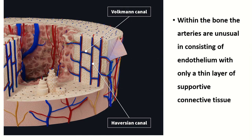The periosteal artery passes through Volkmann's canal, gives longitudinal branches which occupy the Haversian canal, communicates with another Volkmann's canal, and again gives longitudinal branches. It ultimately anastomoses with the branches of the nutrient artery, which also enter Volkmann's canal and give longitudinal branches. The blood vessels within the bone are characterized by very thin endothelium with a very thin layer of supporting connective tissue.